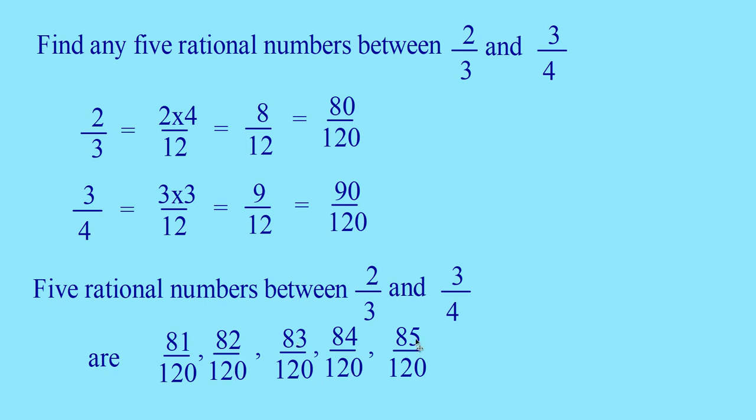In this way you can find any number of rational numbers between any two rational numbers. If you multiply by a number other than 10 — say 5 or 1000 — you will get another set of 5 rational numbers between 2 by 3 and 3 by 4. You can find any number of such rationals by multiplying both numerator and denominator by a suitable number.